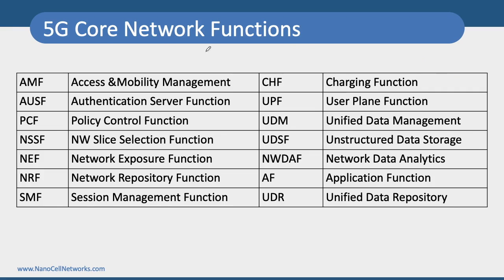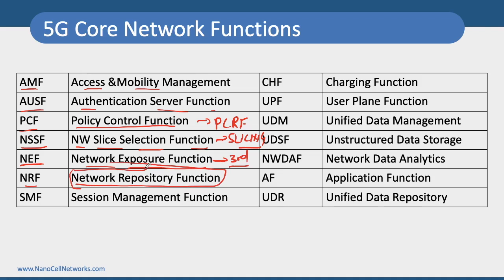Here is a quick overview of all these network functions: AMF is Access and Mobility Management Function; AUSF is Authentication Server Function; PCF is Policy Control Function, similar to PCRF; NSSF is Network Slice Selection Function used for supporting network slicing; NEF is Network Exposure Function, exposing your network to third-party services; NRF is Network Repository Function — the broker function that enables network functions to discover and communicate with each other; SMF is Session Management Function; CHF is Charging Function; UPF is User Plane Function; UDM is Unified Data Management; and UDSF is Unstructured Data Storage Function.